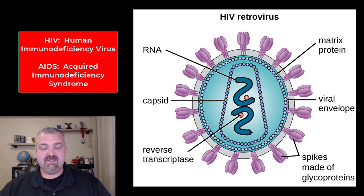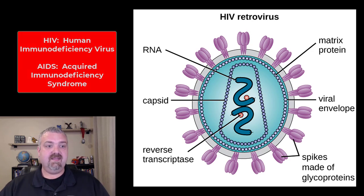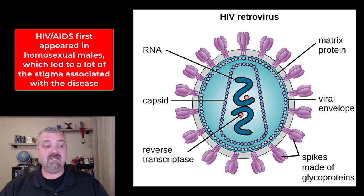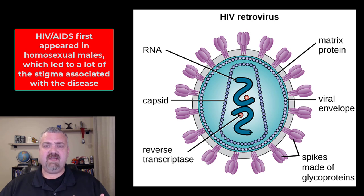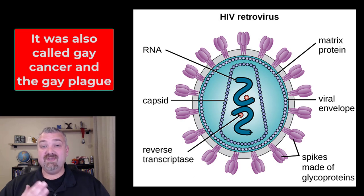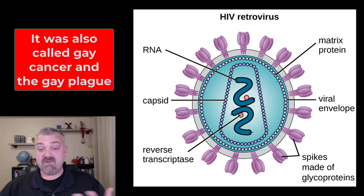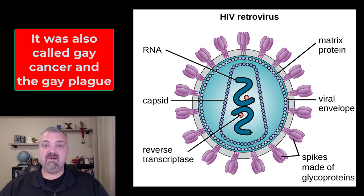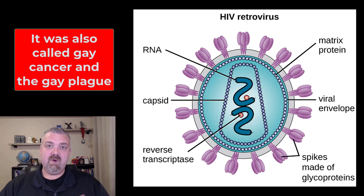They started to gather data and they realized that it was in these populations of young homosexual males. The reason I bring this up is because of the stigma that came with it. Obviously the majority of people that have HIV infection are heterosexual, but at this time this is where it showed up first — so much so that for a while it was called gay-related immunodeficiency syndrome. Obviously this is where some of this terrible stigma comes from.